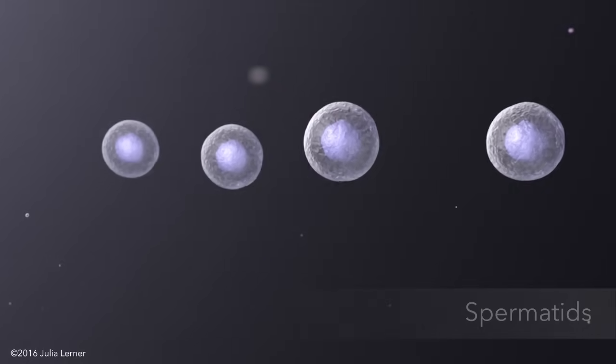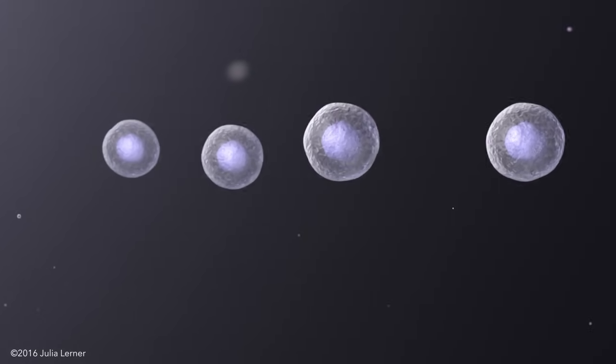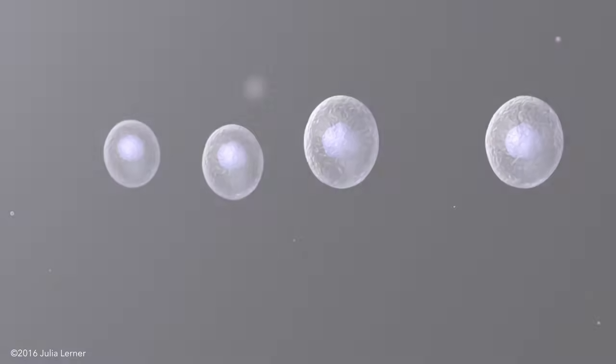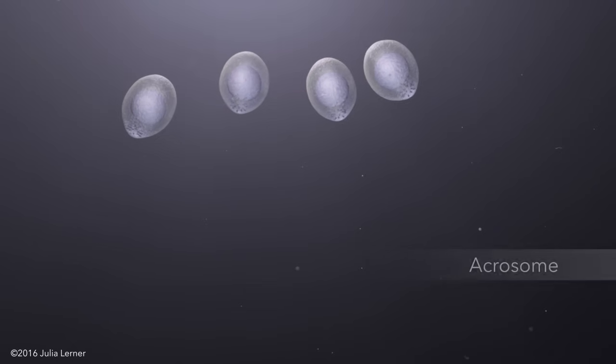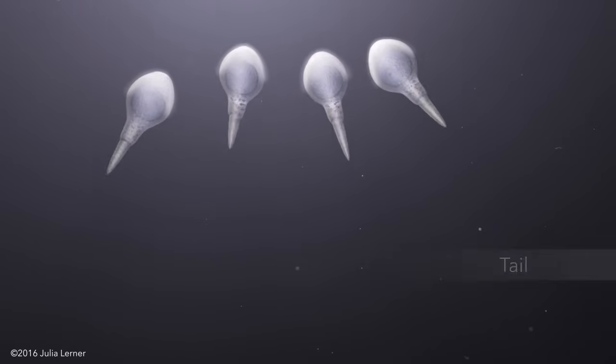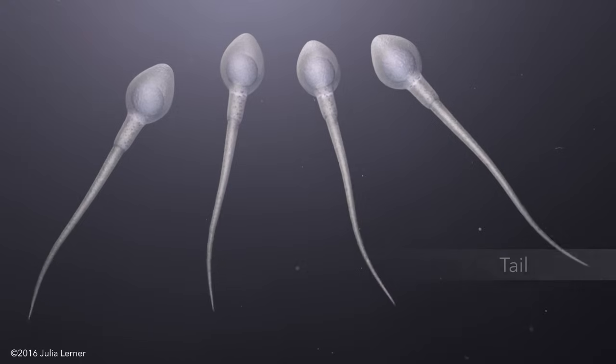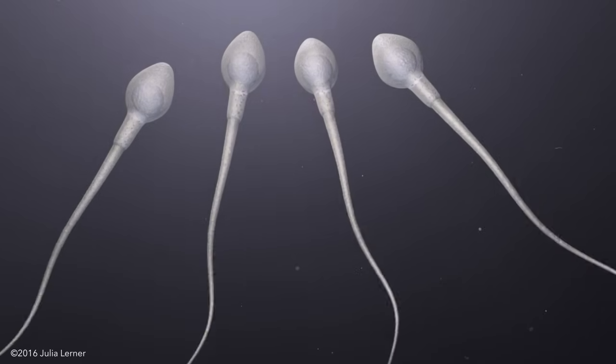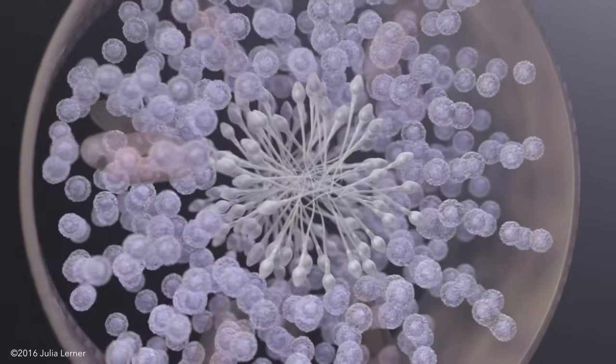Through a process known as spermiogenesis, the spermatids change shape, transforming into mature sperm cells. The spermatid's nucleus condenses, the acrosome appears, and the tail begins to grow. Much of the cytoplasm is shed as spermiogenesis completes.